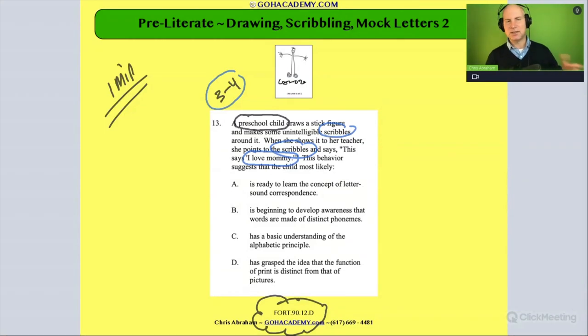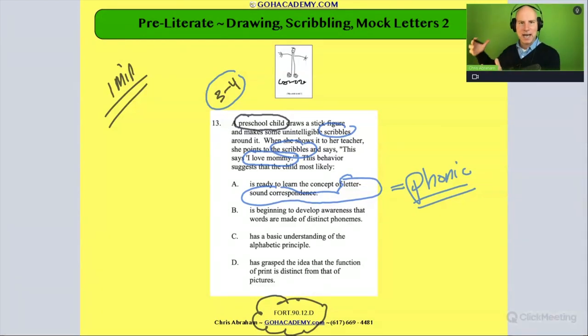So that's going to get us to our answer, but let's just cross out the ones that don't match up. It says the child is ready to learn the concept of letter sound correspondence. So that means the child is ready for some what? Phonics. Not yet. In fact, we're not going to be able to do phonics until we have that alphabet knowledge and that basic phonics.